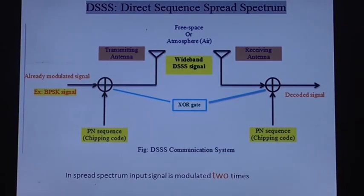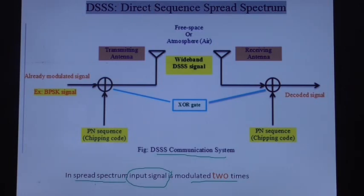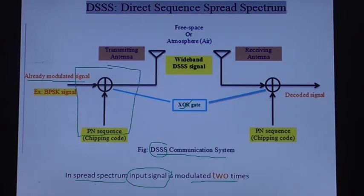The block diagram for a DSSS communication system is shown here. Note that in a spread spectrum communication system, the input data signal is modulated two times. In the transmitter section of a DSSS communication system, the already modulated signal is given as input to an XOR gate — this is a type of second modulation. The PN sequence is combined with the already modulated signal, for example a BPSK signal, and the output is fed to the transmitting antenna.